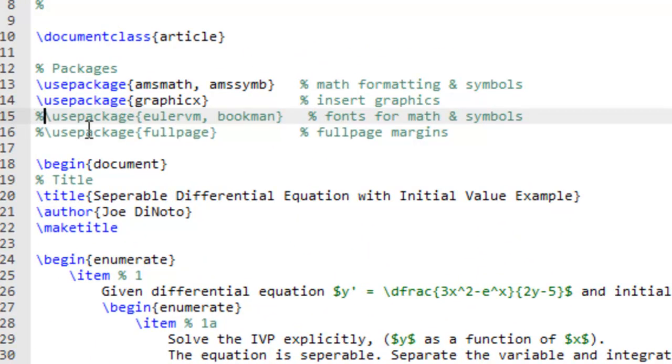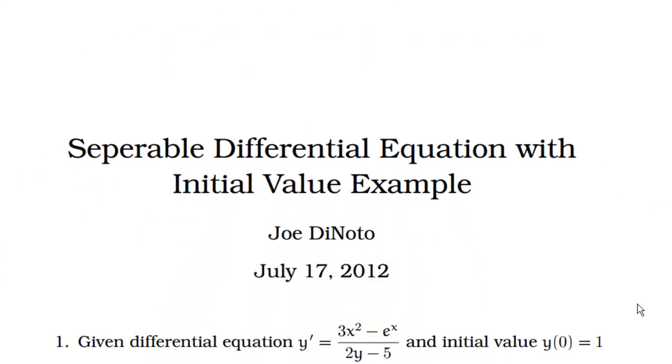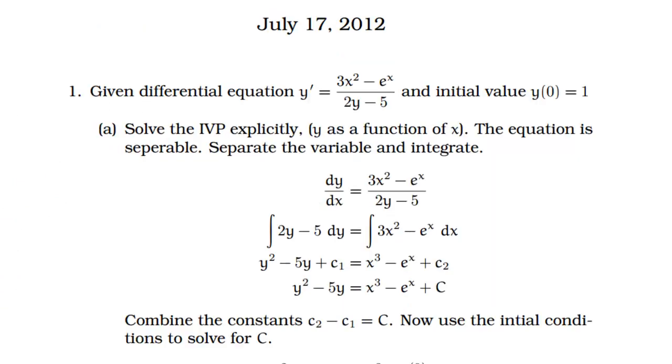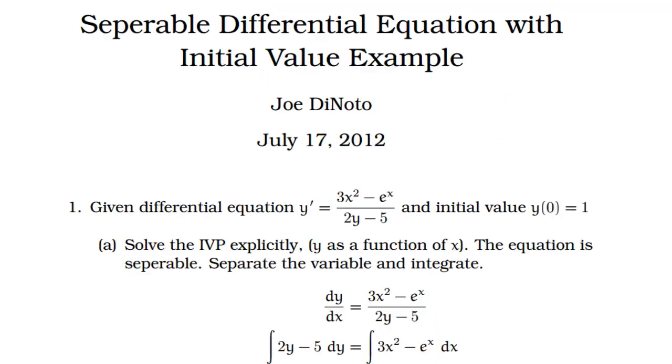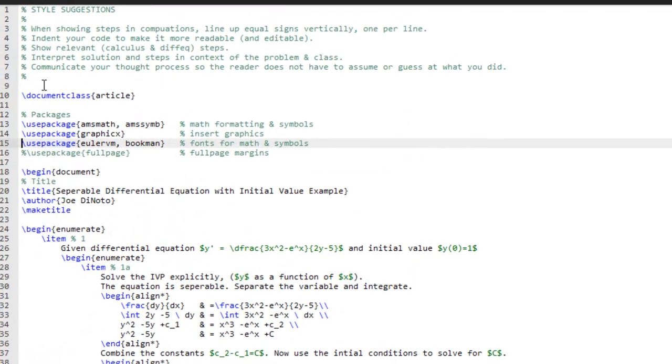If I use Bookman and Euler VM, and I go to PDF, the font is a little bit thicker. The math font changes a little bit. I find this a little bit easier to read sometimes because it's just my personal preference. And whatever you like is your preference. It really doesn't make a difference, but it's nice to know that it's there.